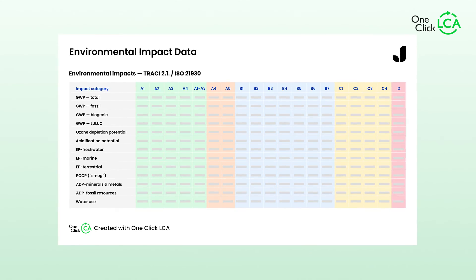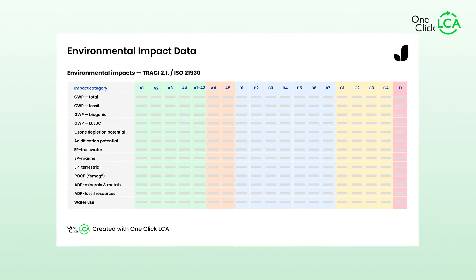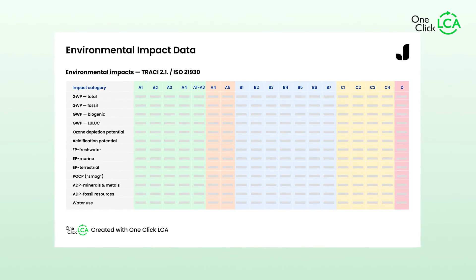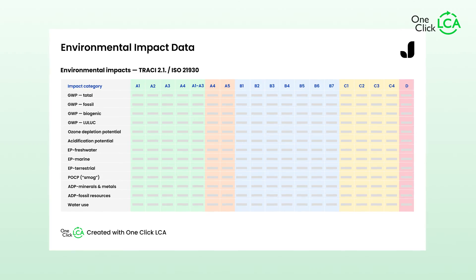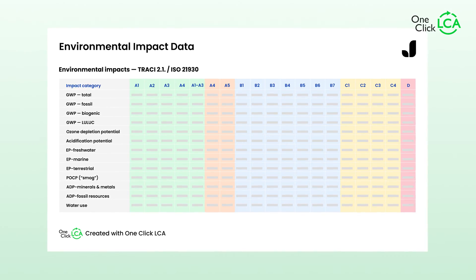It includes information on environmental impact such as resource consumption, emissions to air, water, soil, and other significant aspects. An EPD does not expose any commercial or sensitive information about the company, and is usually valid for a period of five years.